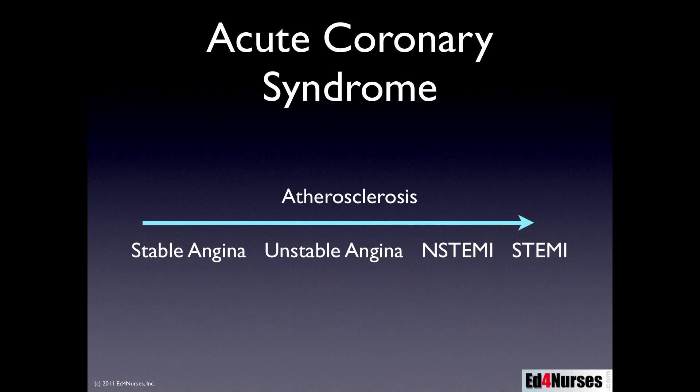The underlying problem is atherosclerosis, which leads first to stable angina, then unstable angina, then non-ST-segment elevation MI — meaning the patient's having an MI but without EKG changes — and lastly, ST-segment elevation MI. The worst case scenario on this continuum is the ST-segment elevation MI. Your patient starts on one end and moves down the continuum, sometimes more rapidly than other times, depending on the type of obstruction occurring in the coronary vasculature.